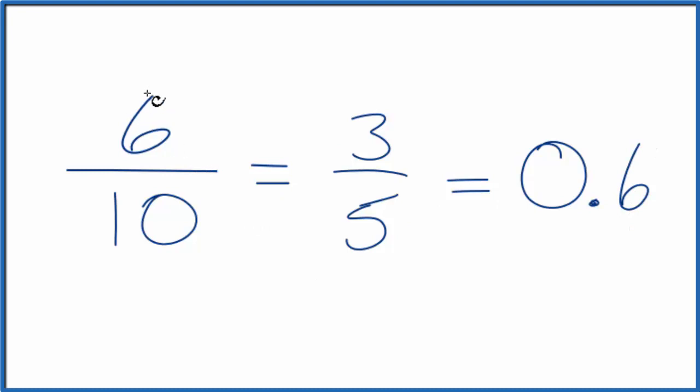So the fraction 6/10, or 3/5, equals the decimal 0.6. We could also do this longhand. Let's do that.